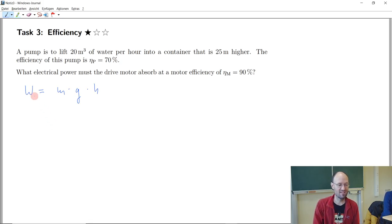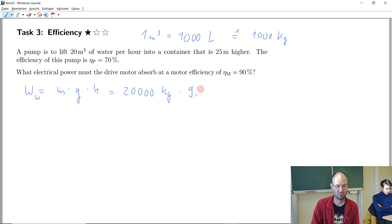This would be the mechanical energy of the water. I will use W for water. So it's 20,000 kilograms. We had this before, so one cubic meter is the same as a thousand liters and so this corresponds to a thousand kilograms of water with the density calculation that we had before, so we have 20,000 kilograms times 9.81 meters per second squared times 25 meters.